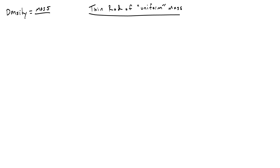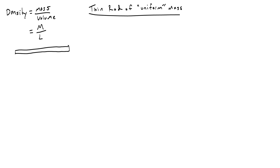Remember that density is just mass divided by volume. For a thin rod, the width of the rod is so small that you can treat the volume as if it were just a line — just a length. Normally if you were using the volume of a rectangle you would do width times length, but in this case you're just using the length. So when we talk about density, it is the mass M divided by L, which is the total length of the rod.